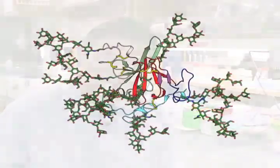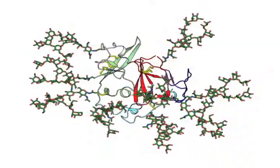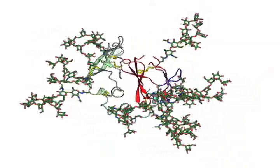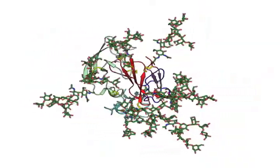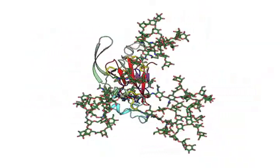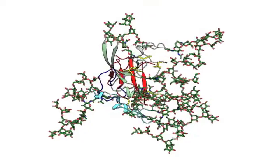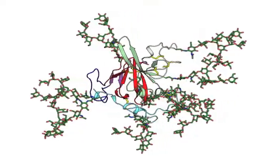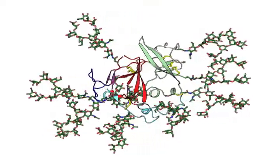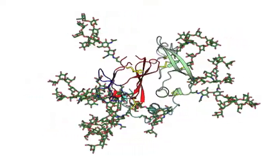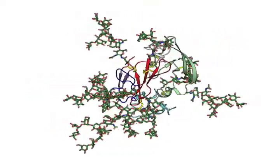Another big challenge is that it has a lot of sugars on top of it — it's not just protein, 50% of its weight is actually sugar. And sugar when attached to protein moves around a lot, so it's very hard to crystallize.